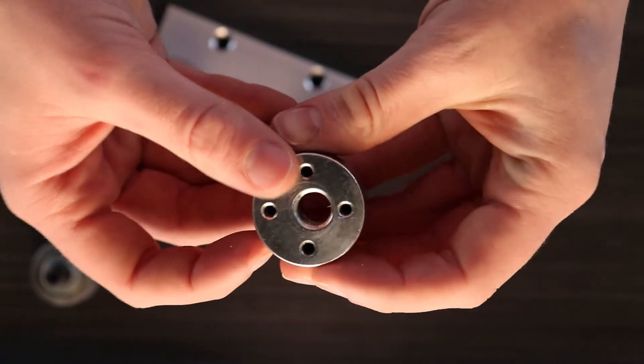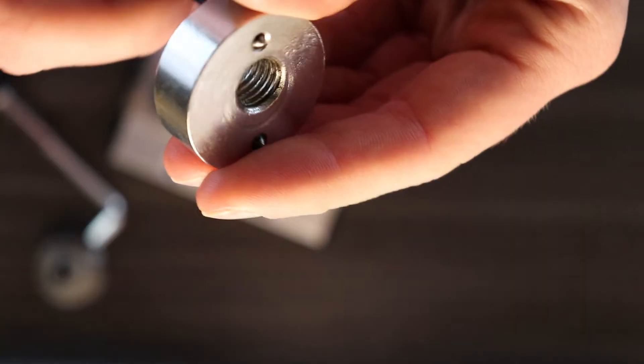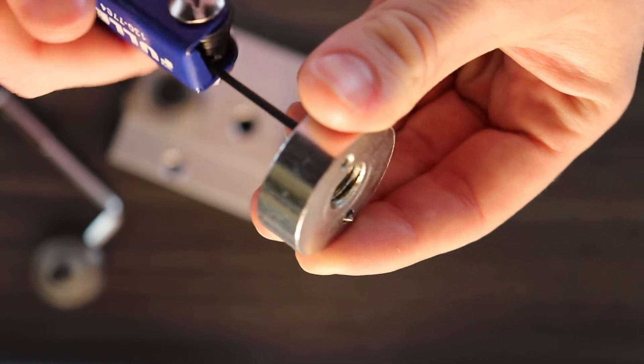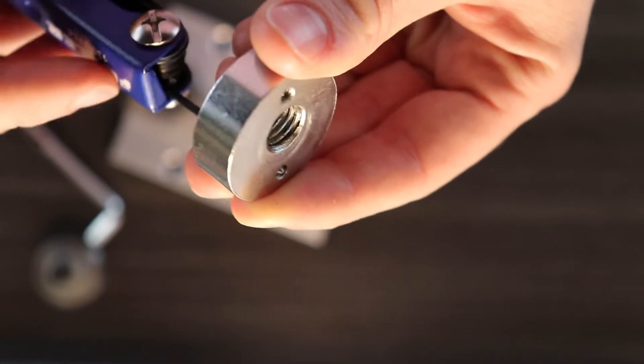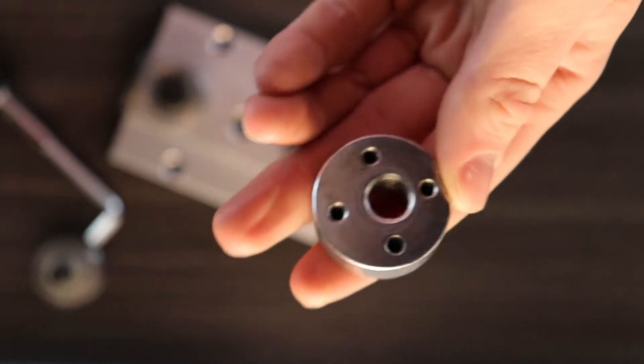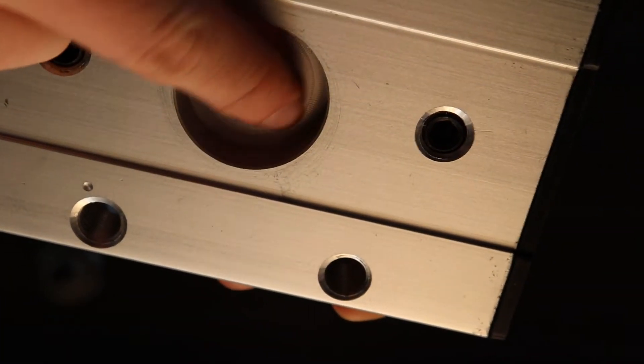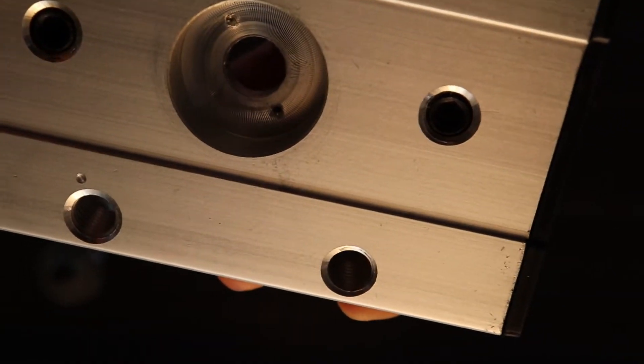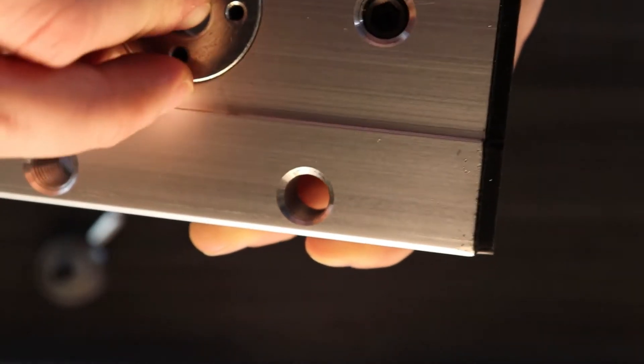Now partially unscrew the set screws that we tightened earlier. Notice these teeth like marks on the carriage where the set screws held the silver disc in place.